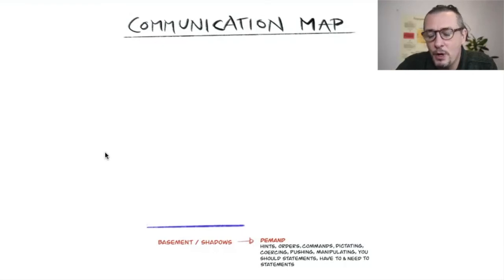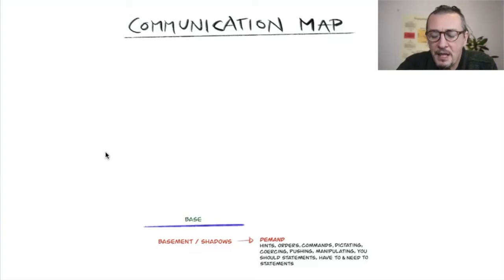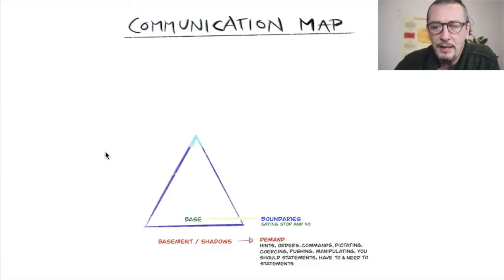Then you have base communication, where you express your boundaries—saying no or stop—where you're capable of expressing your limits and boundaries. This is what creates the container: when you know how to ask for what you want, make a request.